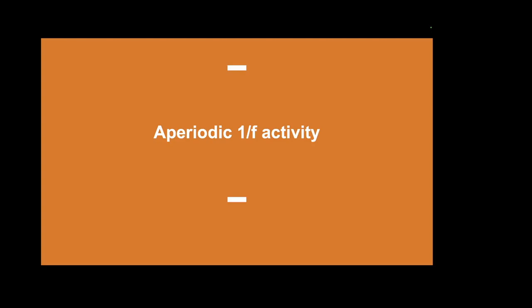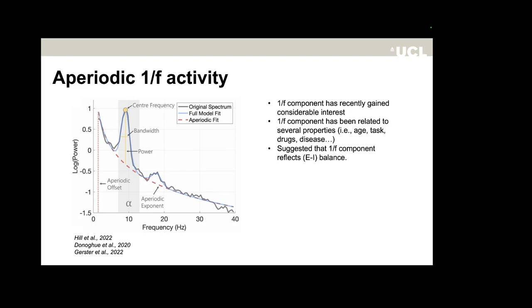Finally, alongside periodic or oscillatory activity, there is also aperiodic or 1-over-F activity in electrophysiological signals. This is characterized by the slope of the power spectrum—lower frequencies have higher power and higher frequencies have lower power. The aperiodic exponent has recently gained considerable interest and has been related to age, task, drugs, and disease, and has been suggested to reflect excitation-inhibition balance. It is important not to focus only on periodic activity but also consider the aperiodic component of the spectrum.